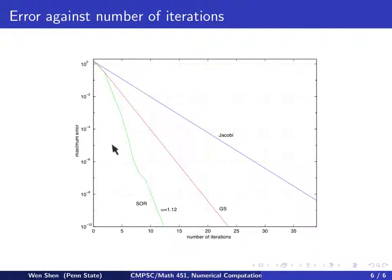if your error tolerance shall be 10 to the negative 5, which is approximately here, and you draw a horizontal line, then you see Jacobi iteration will require about 24, 25 iterations, and Gauss-Seidel between 12, something like that,